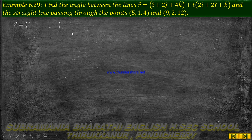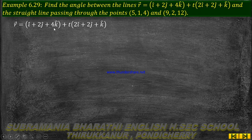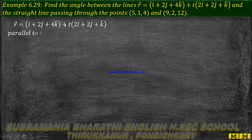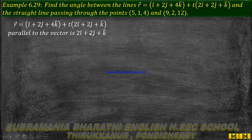For the first line, r vector equal to i cap plus 2j cap plus 4k cap plus t into 2i cap plus 2j cap plus k cap. The general form is r vector equal to a vector plus d into b vector. So the parallel vector b vector is 2i cap plus 2j cap plus k cap.